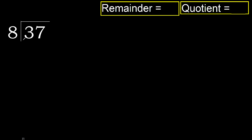37 divided by 8. 3 is less, therefore next. 37 is not less, therefore with 37: 8 multiplied by which number is nearest to 37 but not greater?